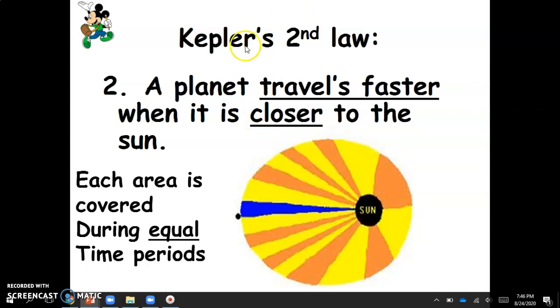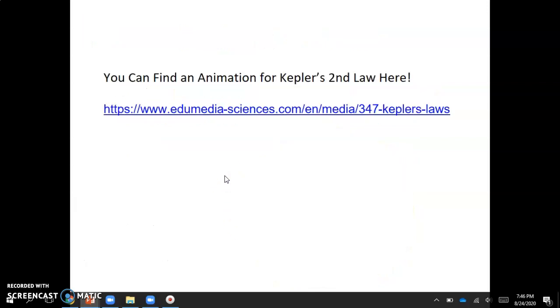All right, so Kepler's second law, the planet travels faster when it's closest to the sun, and the planet will sweep equal areas in equal amounts of time. So all these triangles are the same area, and they all take the same amount of time for the planet to cover that amount of area. And there's an animation in here if you guys want to click it in your presentation. As always, your slides are linked, and you'll be able to pull that up and see it.